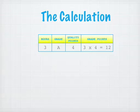In a course of three credit hours receiving a grade of A, which is four quality points, we multiply three times four, giving us twelve grade points.